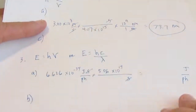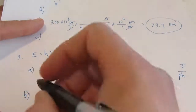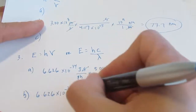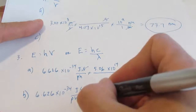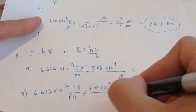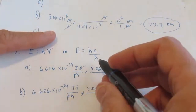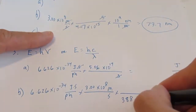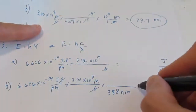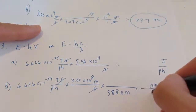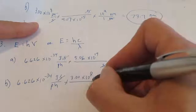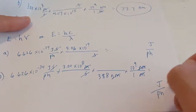Letter B: I give you the wavelength in nanometers, so we use E = hc/λ. H is 6.626 times 10 to the negative thirty-fourth joule seconds per photon, times the speed of light: 3.00 times 10 to the eighth meters per second, divided by the wavelength given: 388 nanometers. Seconds are gone, but meters and nanometers do not divide out. So we add a step to get out of nanometers: one meter is a billion nanometers. Nanometers are gone, meters are gone, and once again we're left with joules per photon.